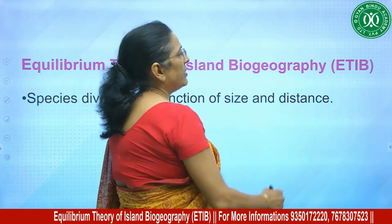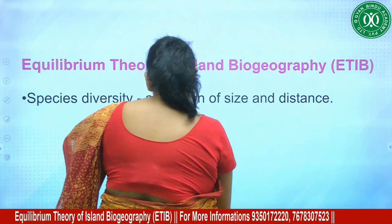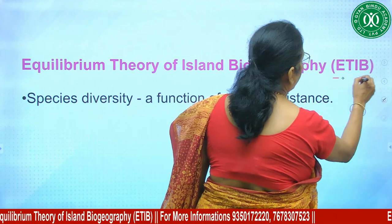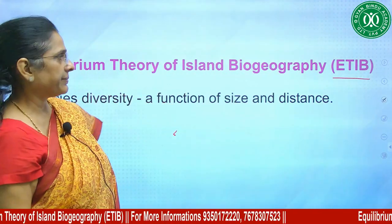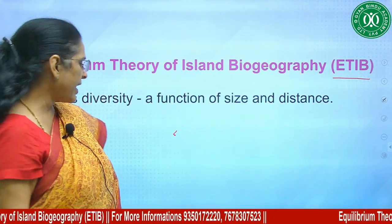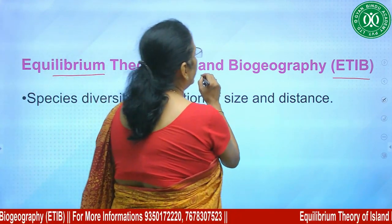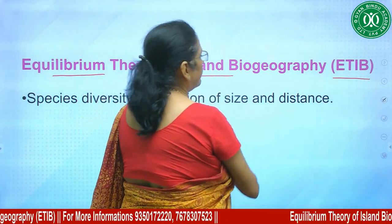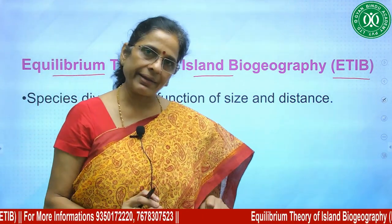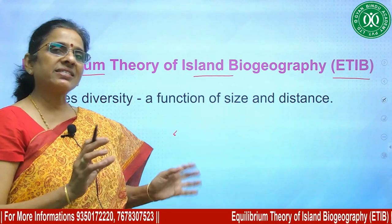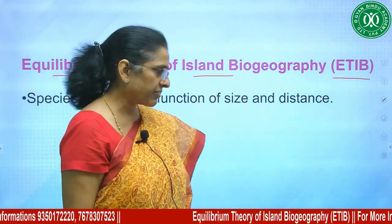ETIB — almost every time an important question is asked from this topic, either in Part B or Part C. This is very simple; as the name suggests, there are two keywords: equilibrium and island. This theory is related to islands and talks about equilibrium of species biogeography.